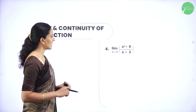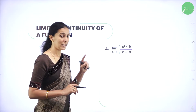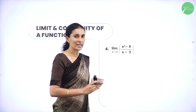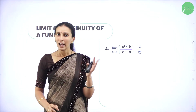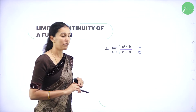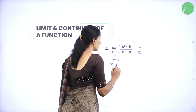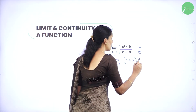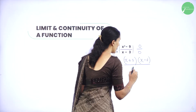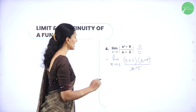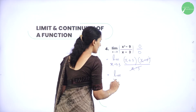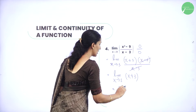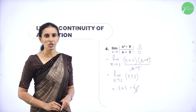Next: limit as x tends to 3 of x square minus 9 divided by x minus 3. Substituting 3 gives 0 by 0. So x square minus 9 is in the form of a square minus b square, written as x plus 3 times x minus 3, divided by x minus 3. Cancel x minus 3, then apply the limit: 3 plus 3 equals 6. The limit of the function is 6.